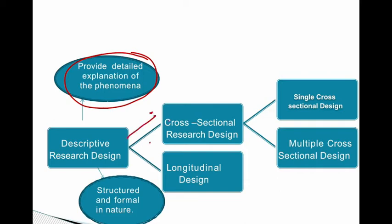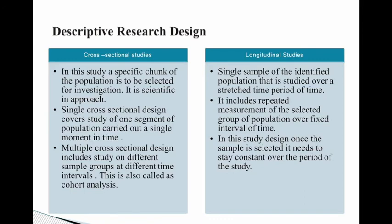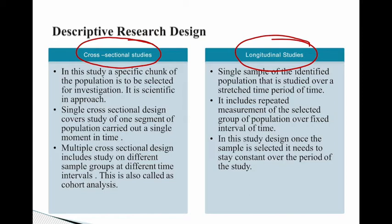If you look at the further classification of descriptive design, one type is cross-sectional research design and the other is longitudinal research design. Cross-sectional is further classified as single cross-sectional design and multiple cross-sectional design. In cross-sectional study, a specific chunk of the population is selected for investigation. It is scientific in approach — structured and formal in nature. In a single cross-sectional design, we cover one segment of the population at one point in time, whereas in multiple cross-sectional design, we study different sample groups at different time intervals, which is also called cohort analysis.